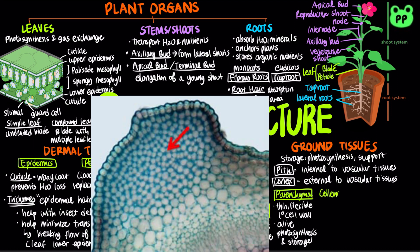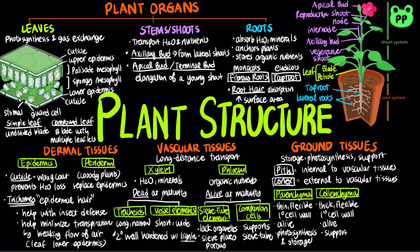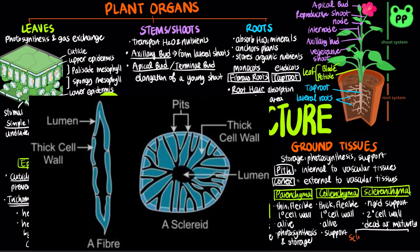Collenchyma cells have thicker yet still flexible primary cell walls. They are also alive at maturity and function in supporting stems and leaves. Sclerenchyma cells provide rigid support due to thick secondary walls and are dead at functional maturity. There are two types of sclerenchyma cells: sclereids, which are short and irregular in shape and have thick secondary cell walls strengthened by lignin, whereas fibers are long and slender and arranged in threads.